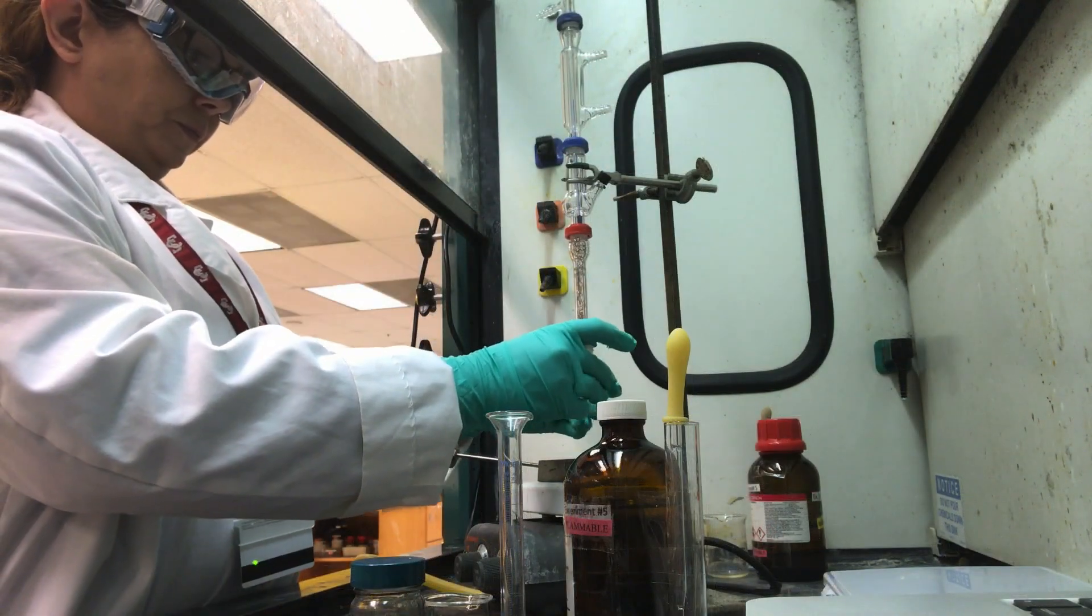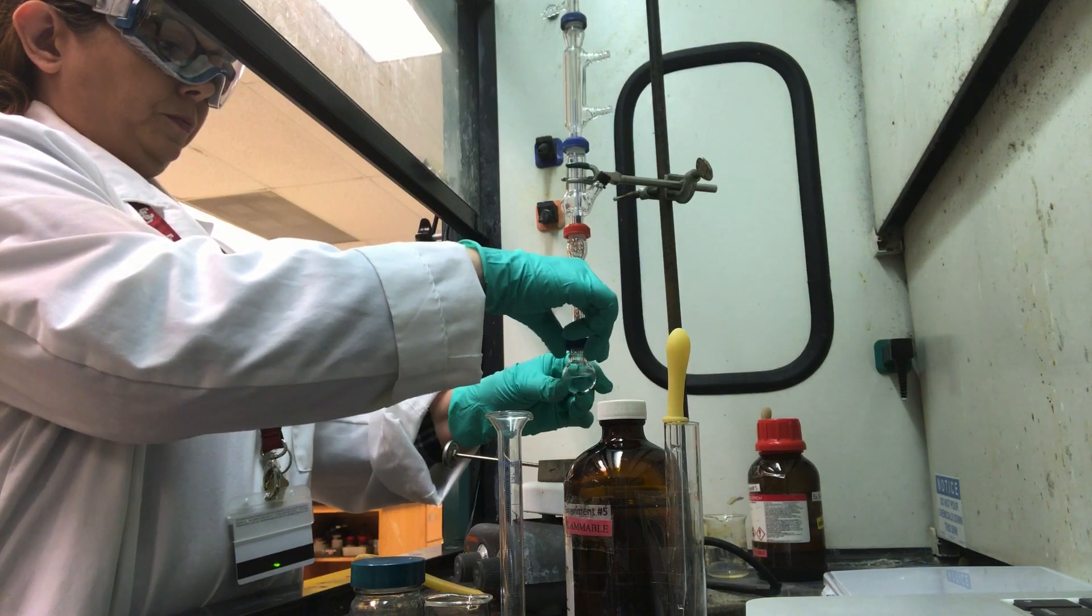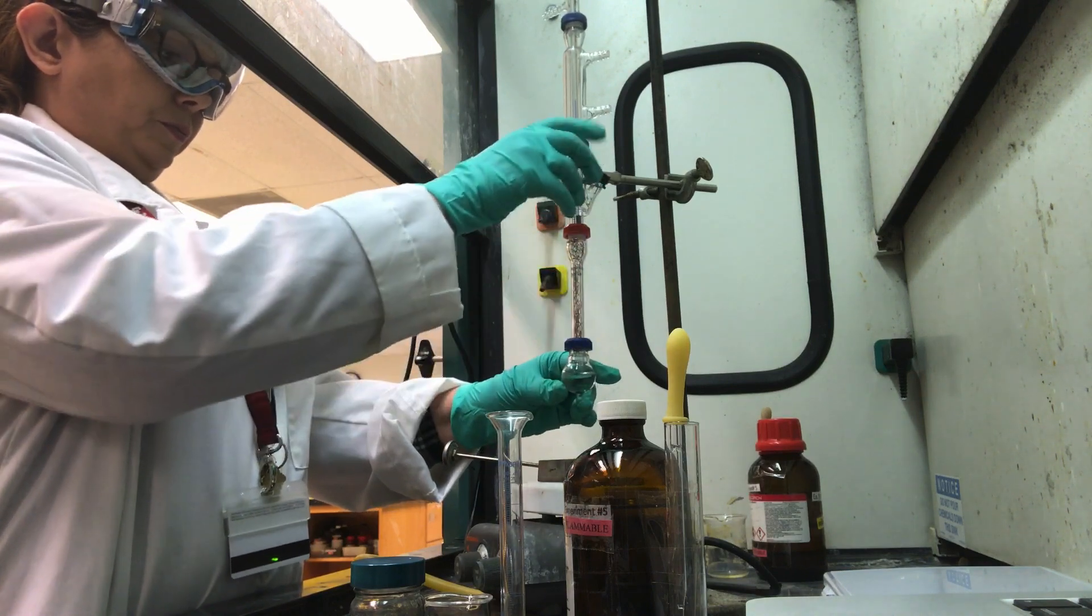Once the sample is in your 10 milliliter round bottom flask, you may attach it and lower the apparatus back into the aluminum block.